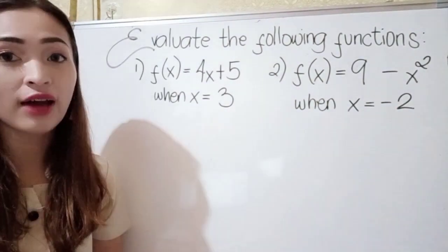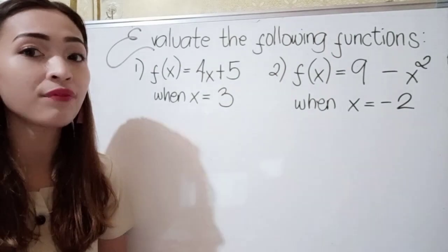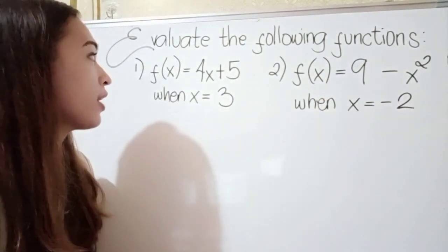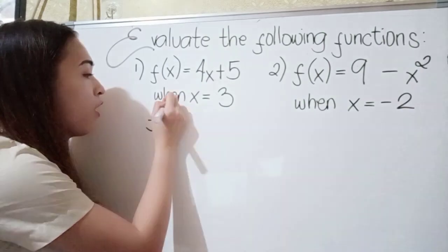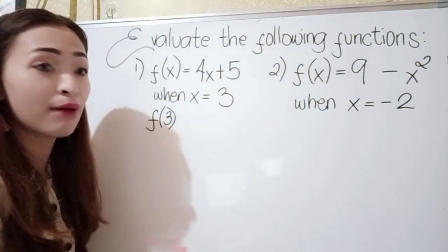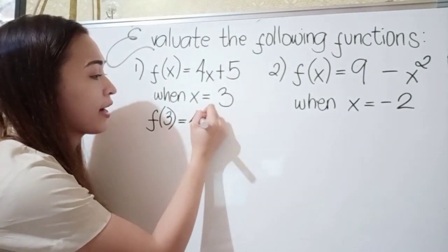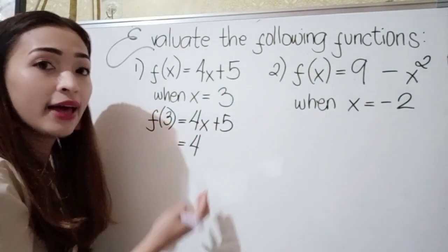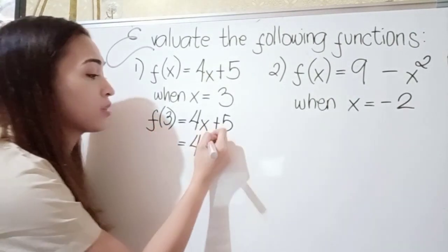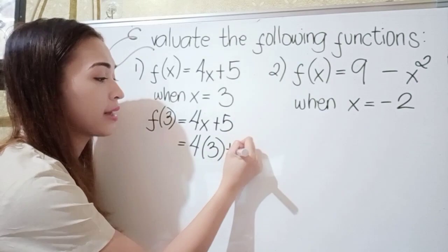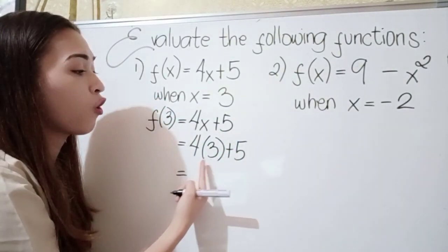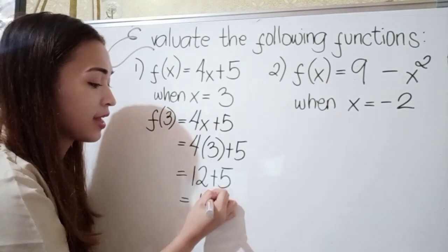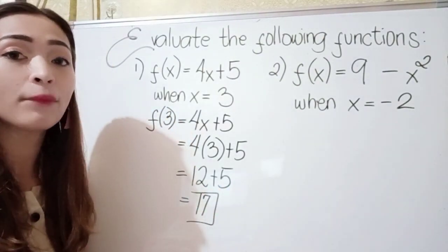For number 1, we have f(x) equals 4x plus 5, when x is equal to 3. What you're going to do is just substitute the value of 3 to x. So f(3) equals 4x plus 5. Just copy the given, then substitute: 4 times 3 plus 5. Multiply 4 and 3: that's 12 plus 5, which equals 17. So our answer in number 1 is 17.